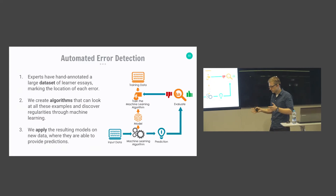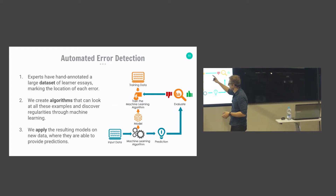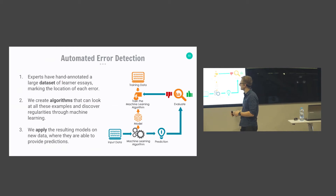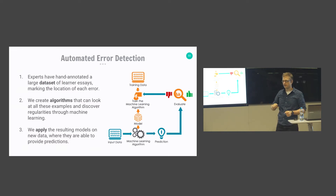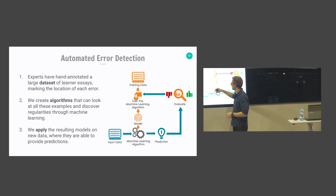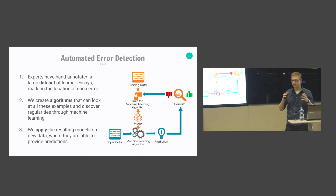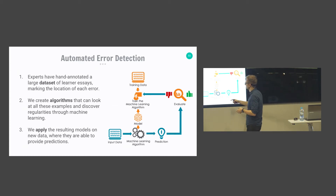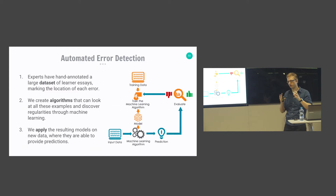We want to approach this problem from a machine learning perspective. We collect data written by real language learners that has been marked and annotated by language experts. We then create machine learning algorithms that look at this data, discover regularities, and learn different patterns. Once we have this model, we apply it to new data to predict specific errors and their locations.